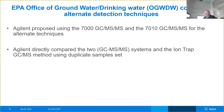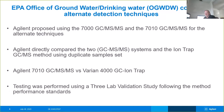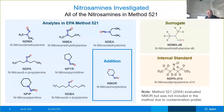Agilent directly compared the two GCMS-MS systems with the ion trap method by using three separate laboratories with duplicate sample sets sent to each laboratory. Today we're going to present a more detailed comparison of the Agilent 7010 GCMS-MS versus the Varian 4000 GC ion trap, again using three separate laboratories. You can see the compounds presented in this study, with the exception of MNOR, because during the process we had a contamination observed in all three laboratories, so that particular compound will not be part of this study.